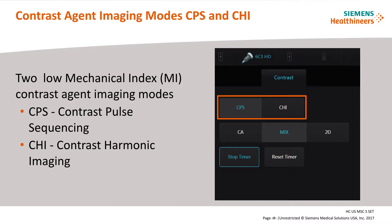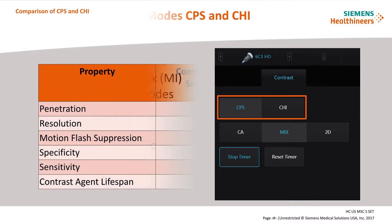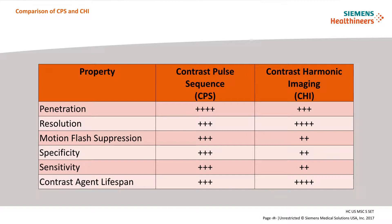Contrast harmonic imaging, or CHI, is a low mechanical index harmonic imaging technique that improves contrast image resolution and frame rate compared to fundamental imaging techniques. When deciding on an imaging technique, the user must consider the type of imaging being performed. If the region of interest is deep in the liver, CPS may be preferred over CHI due to higher penetration and higher motion flash suppression. If the region of interest is small and superficial, CHI may be preferred over CPS, as CHI has higher resolution and lower bubble destruction. The user interface allows quick switching between imaging modes with no image or scanning interruption.